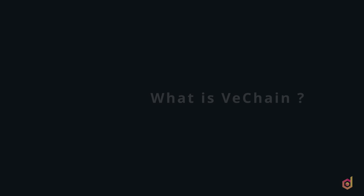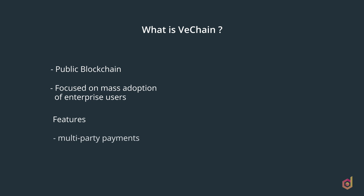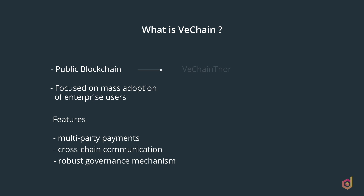Starting with VeChain, it's a public blockchain mainly focused on the mass adoption of blockchain technology by enterprise users of all sizes, with features such as multi-party payment, cross-chain communication, and robust governance mechanisms. The public blockchain is called VeChain Thor. It was launched in 2015 as a subsidiary of Bitse, and then later rebranded as VeChain Thor in 2018.